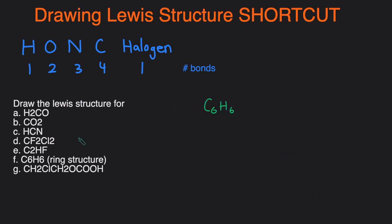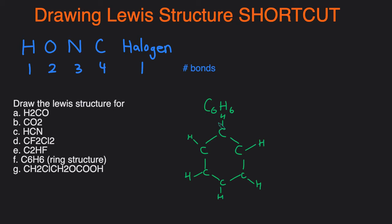Next one, C6H6. This tells us it's going to be in a ring, so the 6 carbons are all going to be in a ring together. We'll attach all 6 carbons in a ring, and then since we have 6 hydrogens, each carbon will have one hydrogen. Then the last thing we have to do is add bonds so that each carbon has 4 bonds. Currently each carbon has 3 bonds, so we add a double bond between alternating carbons — giving us 3 double bonds around the ring — so that each carbon ends up with 4 bonds total.